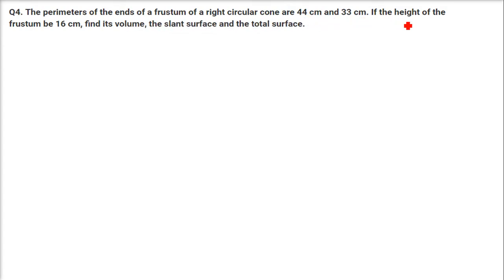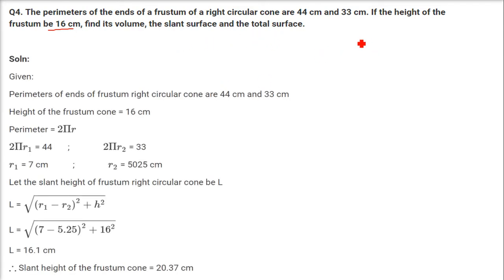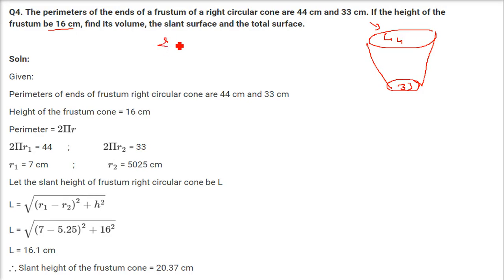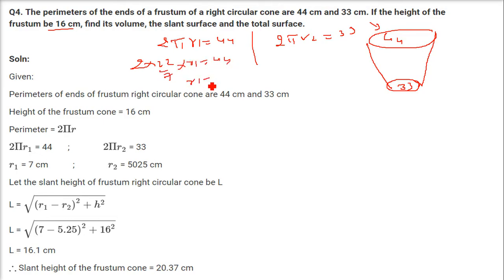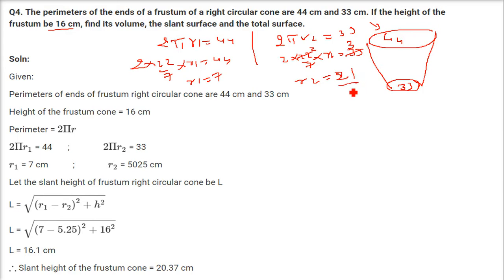The perimeters of the ends of a frustum are 44 and 33, and height is 16 cm. Find its volume, slant surface, and total surface. From 2πr1 = 44 we get r1 = 7. From 2πr2 = 33 we get r2 = 21/4 = 5.25.